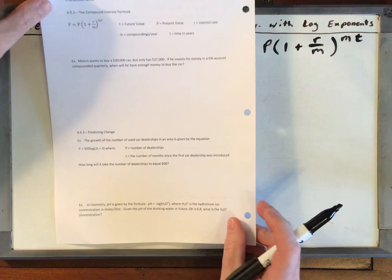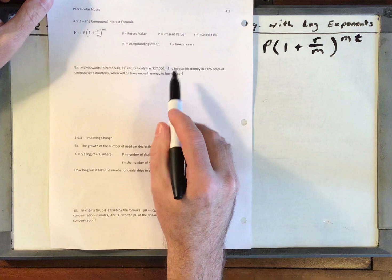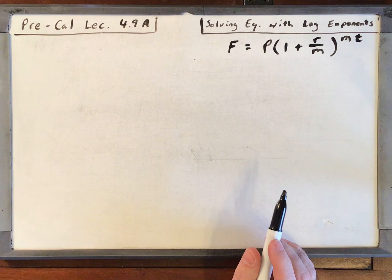Let's go through this one problem and solve for time. Melvin wants to buy a $30,000 car, only has $27,000. Maybe he should just negotiate the $30,000 down to $27,000. But if he invests his money in a 6% account compounded quarterly, when will he have enough money to buy the car? We're solving for time.